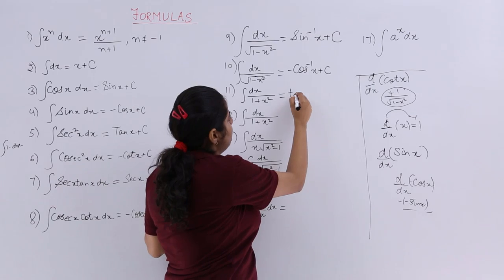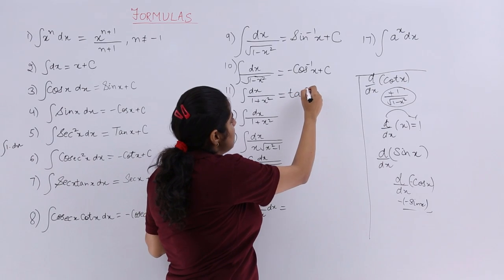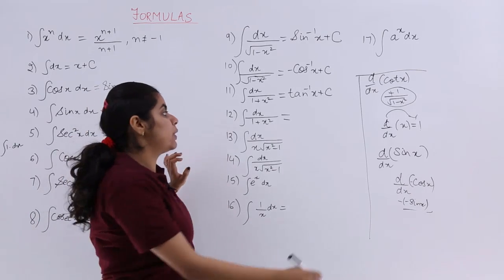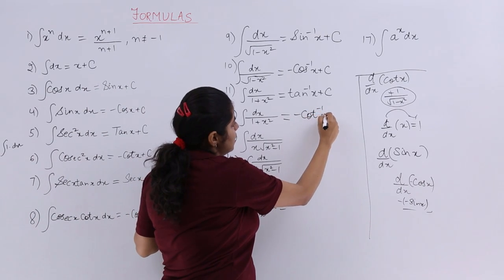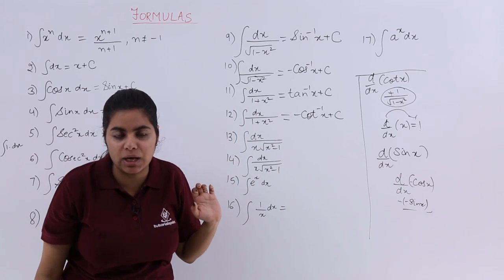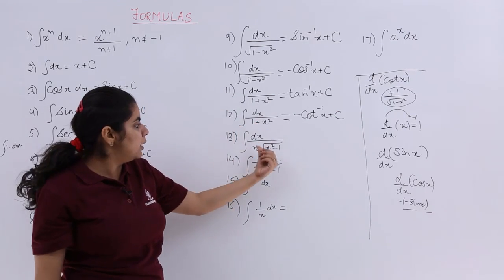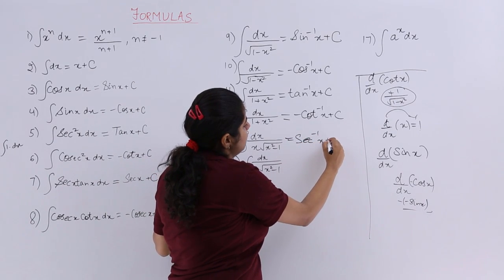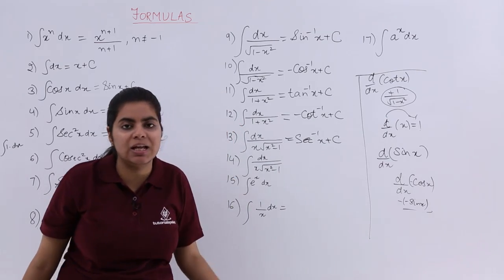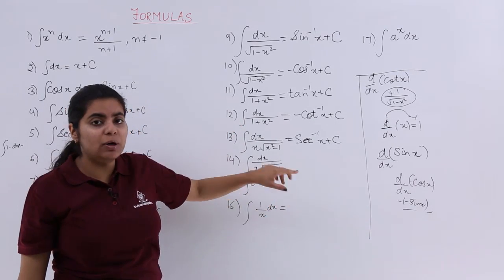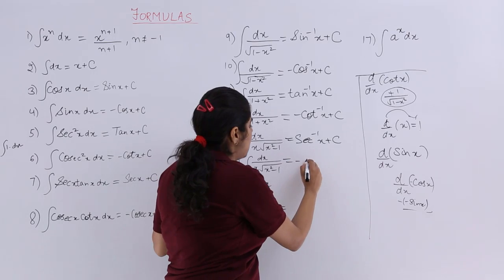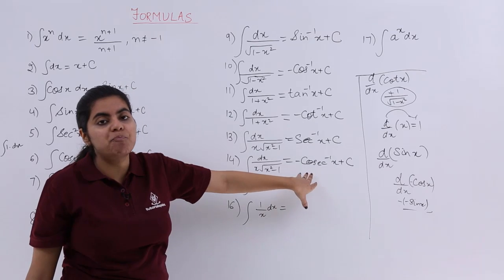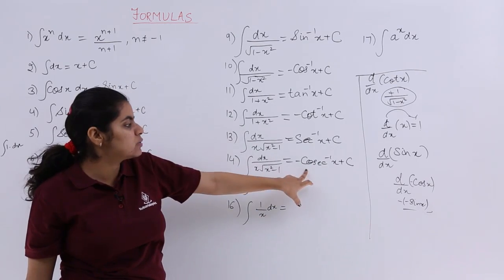Next, integration of 1 upon 1 plus x² equals tan inverse x plus c. We can also say it equals minus cot inverse x plus c, for the same obvious reasons. Then, 1 upon x under root x² minus 1 is the differentiation of secant inverse x, so integration equals secant inverse x plus c. Similarly, for cosecant inverse x, the differentiation has a minus sign, so integration of the same expression equals minus cosecant inverse x plus c.